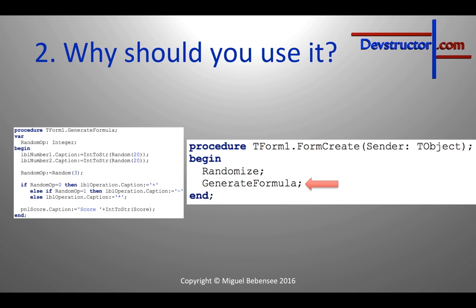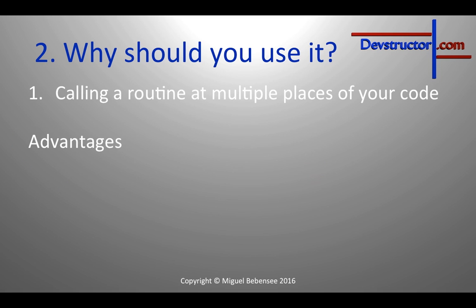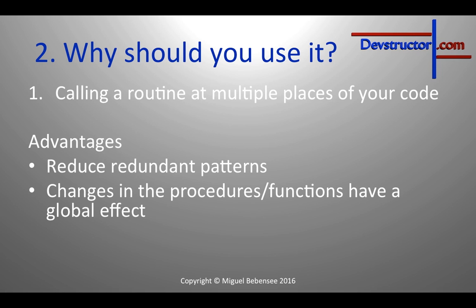We called it in form create and in our button click event. That's really useful because we saved redundancy — we did not write this routine two times in our source, we wrote it just one time inside a procedure. And every time we needed this routine we just called the procedure. That helps you write better code and save quite some work. For instance, if you have to add division to this application, you would have to modify just this one procedure and it will take a global effect.